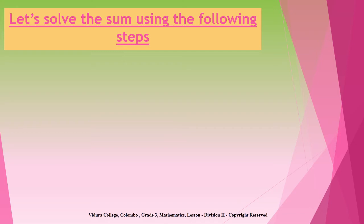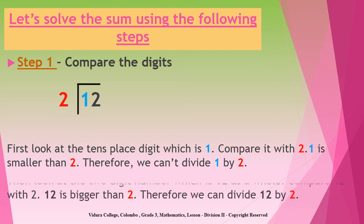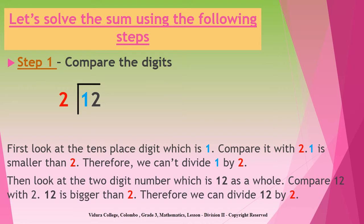To do that, you have to follow four steps. Step one is comparing the digits. Since we are dividing a two-digit number, first we need to compare the tens place digit with two. As you can see, the tens place digit is one. One is smaller than two. Therefore, we can't divide one by two. Then we have to look at the two-digit number we are dividing as a whole. The two-digit number that we are dividing is twelve. When you compare twelve with two, you will see that twelve is bigger than two. Therefore, we can divide twelve by two.